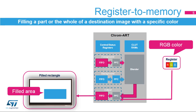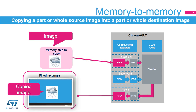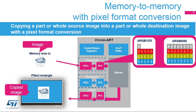Register to memory mode is used to fill a part or whole destination image with a specific color. The color value is set in a register of the output PFC. Memory to memory mode is used to copy a part or whole source image into a part or whole destination image without changing the color format. Memory to memory mode with pixel format conversion is used to do the same type of copy, but with a pixel format conversion.